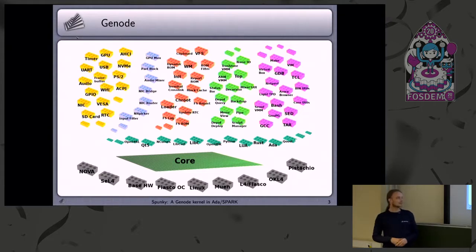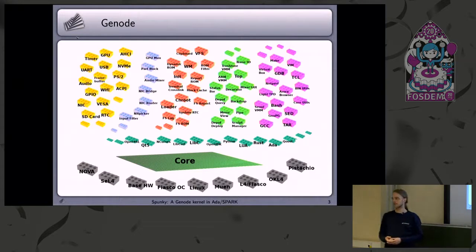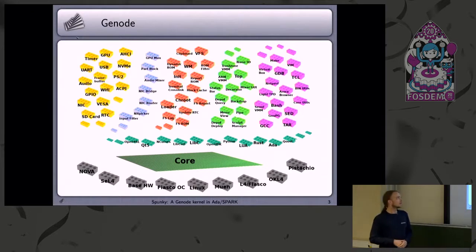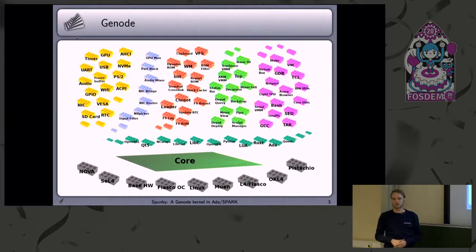On top of that, we have the first component of Gnode: the core. What core does is it actually translates from all these different kernel interfaces to the generic Gnode API abstraction, so that every component running on top of it is generally kernel agnostic. You don't have to recompile it normally to use it on a different kernel.